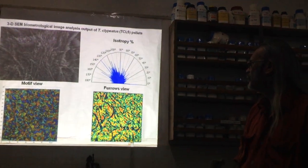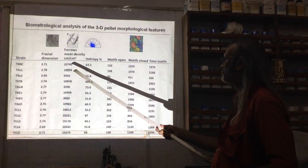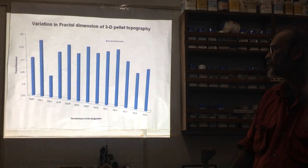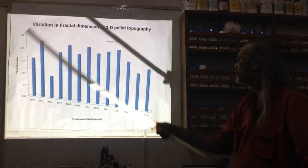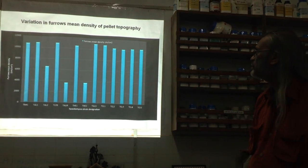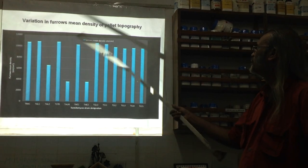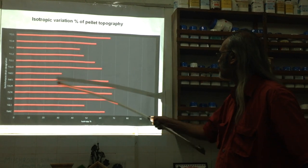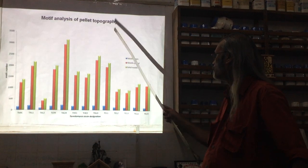Values obtained from all images are further interpreted using graphs. The variation in fractal dimension across strains is shown — low, high, and very high values — indicating heterogeneity useful in deciding types. There is also a lot of variation in furrows mean density, in topography, and in open, closed, and total motifs.